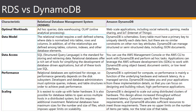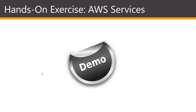DynamoDB integrates easily with other AWS services such as Elastic MapReduce, or EMR, and can easily move data to a Hadoop cluster. Some popular use cases are IoT, gaming, and mobile. Now let's log into the Management Console and create a database instance and access it through our EC2 instance.